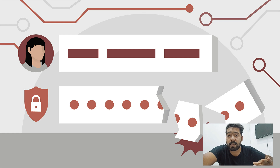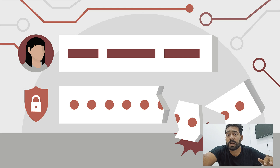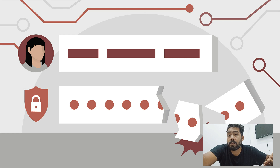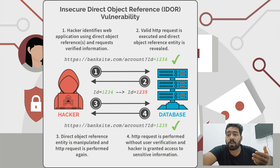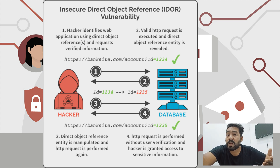The next topic is broken access control, a generic term used in bug bounty that covers IDOR (Insecure Direct Object Reference) vulnerabilities. When a user is able to perform a function that should not be allowed to them, that falls under broken access control, specifically IDOR. A sensitive object or function may be directly accessed by people who should not have access to it.